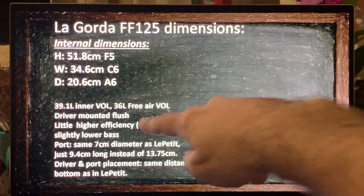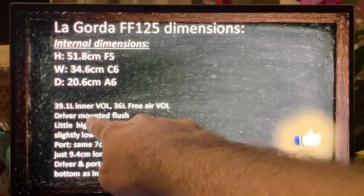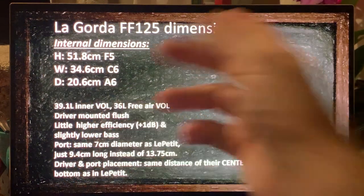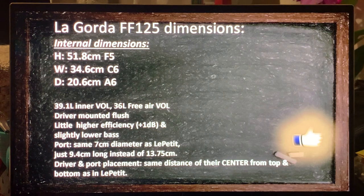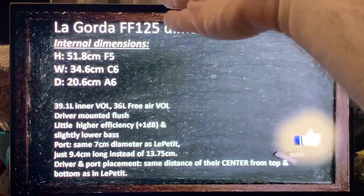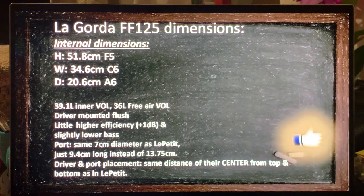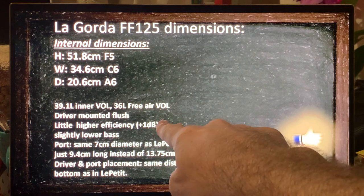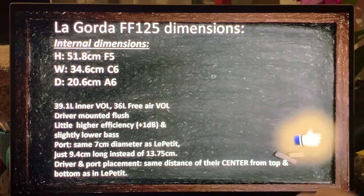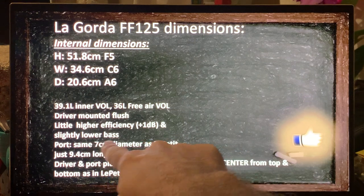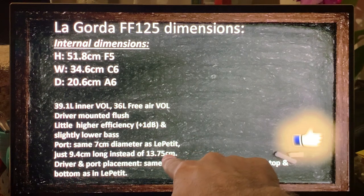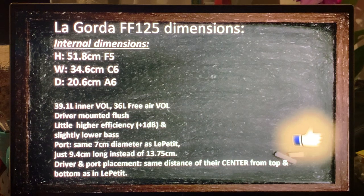Mount the driver flush to the front baffle, don't have it stick out, just make it flush. It will have a little higher efficiency than the original Le Petit with the original driver, and lower bass, lower tuned bass. And as you have seen before, port length, seven centimeter diameter, same diameter, same port as Le Petit, but instead of 13.75 centimeter shorter, 9.4 centimeter long. And also the placement, same.